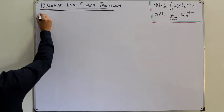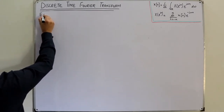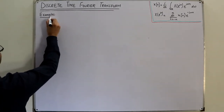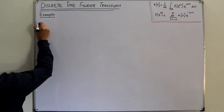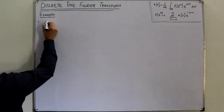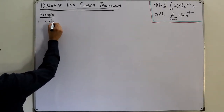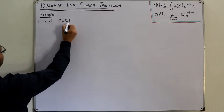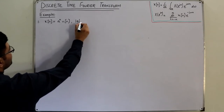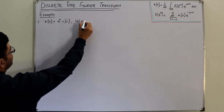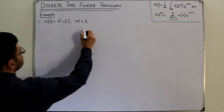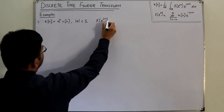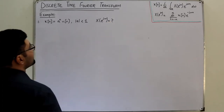Coming to examples — these are book examples. The first example: x(n) is given as a^n · u(n), and it's also given that the magnitude of a is less than 1. We are asked to find the corresponding Fourier transform, that is X(e^jω).